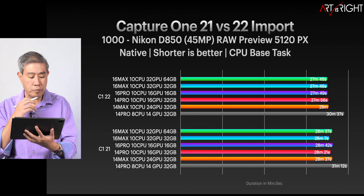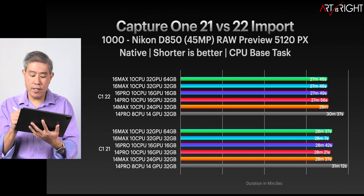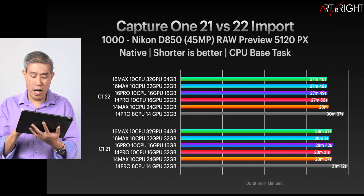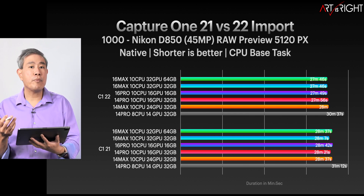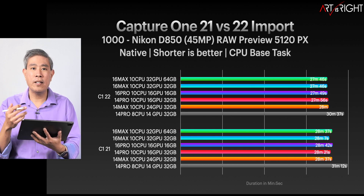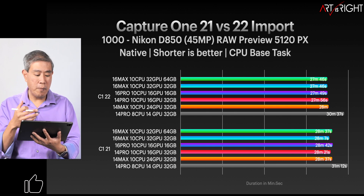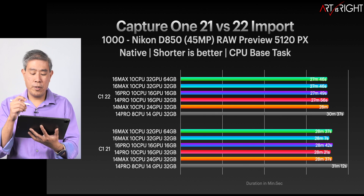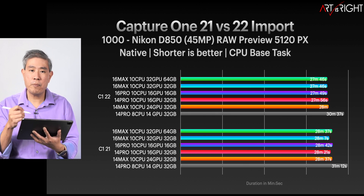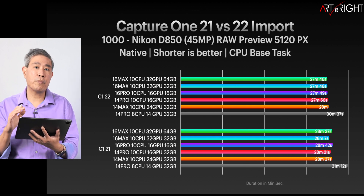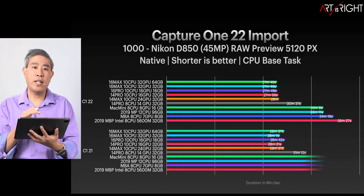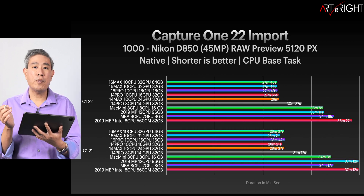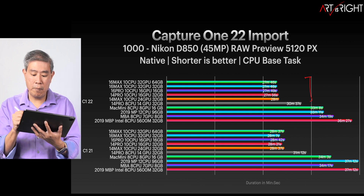Let's start with the results for Capture One 21 versus 22 on the import test — 1000 Nikon D850 files. This gives a good indicator of how the program performs, with Capture One rendering 5120-pixel previews, which uses quite a bit of CPU resources. From this chart we can see some time differences — the graphs are shorter, which is good, but really not by much. We're talking seconds; all of these are generally less than a minute faster. So are we seeing improvement in how the program uses the CPU? I would say yes, but relatively very small.